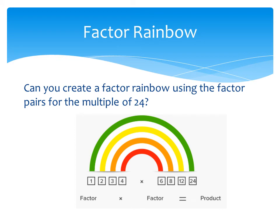Using all of the factor pairs that you've just found, can you create a factor rainbow like the one shown here?